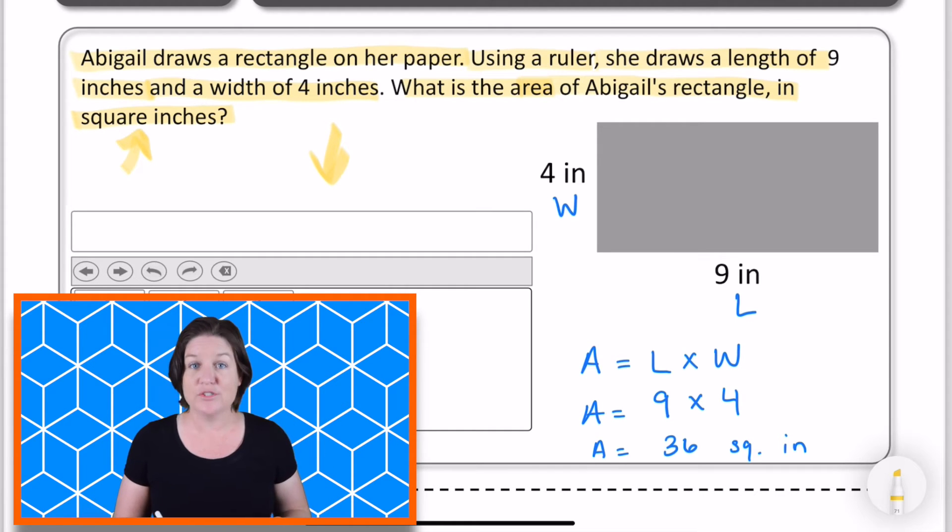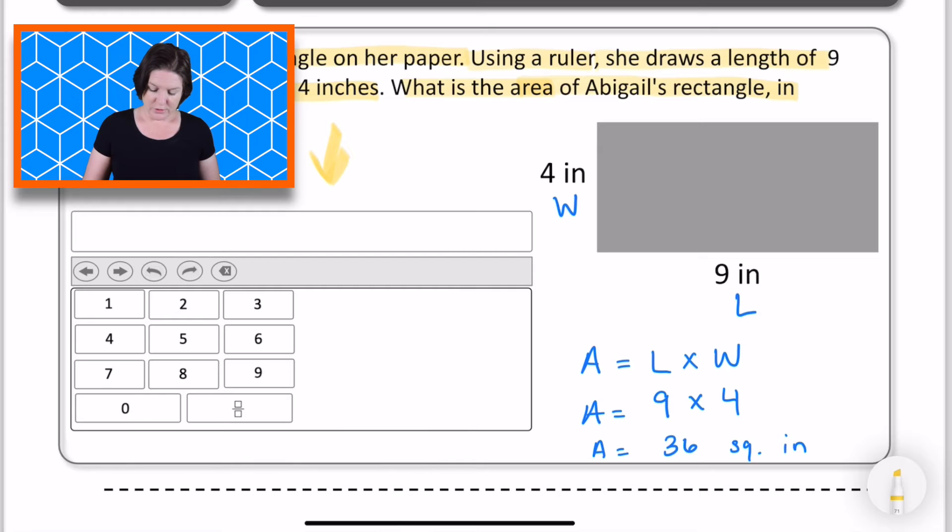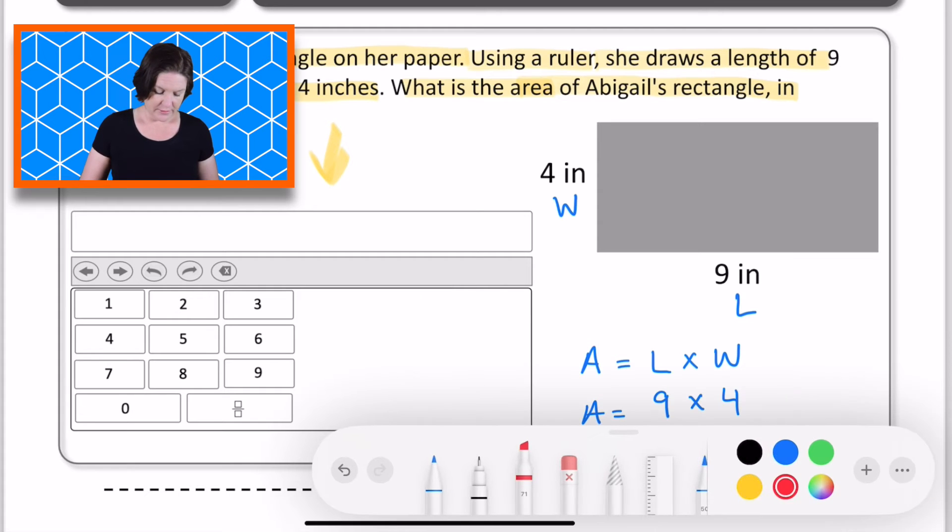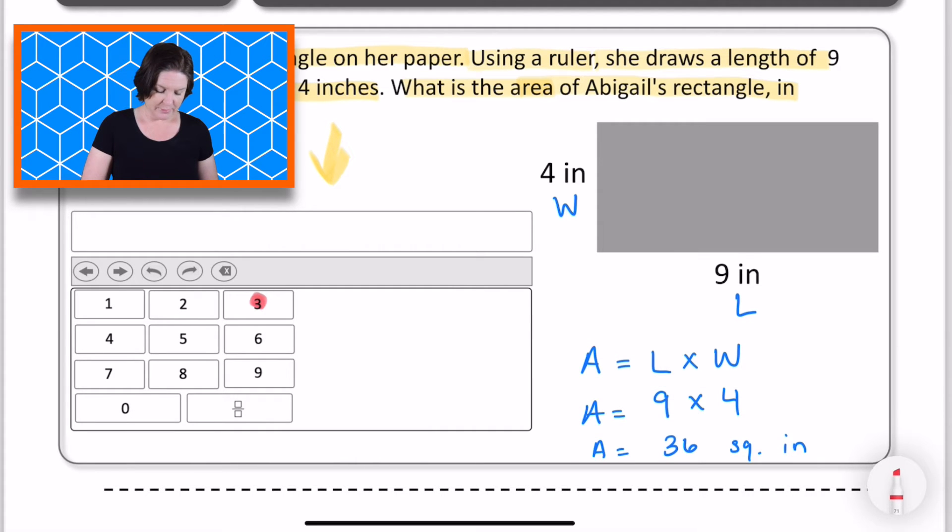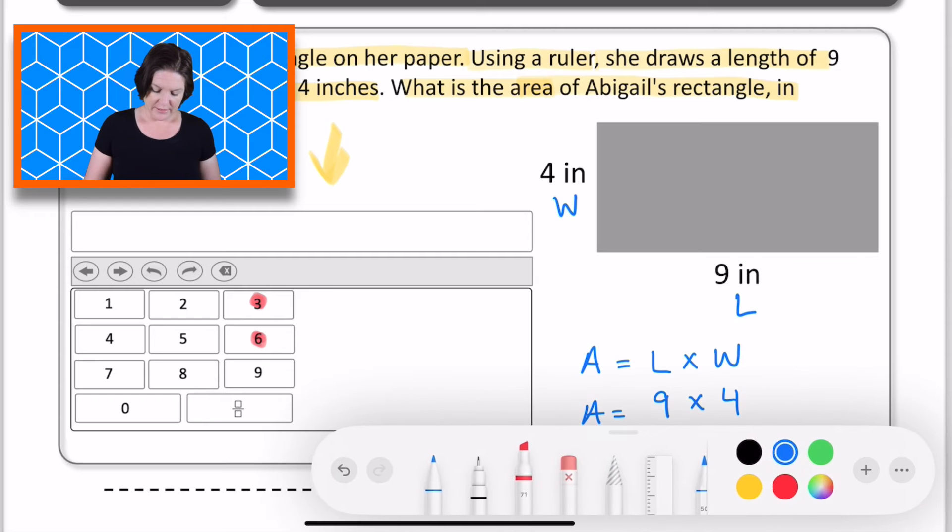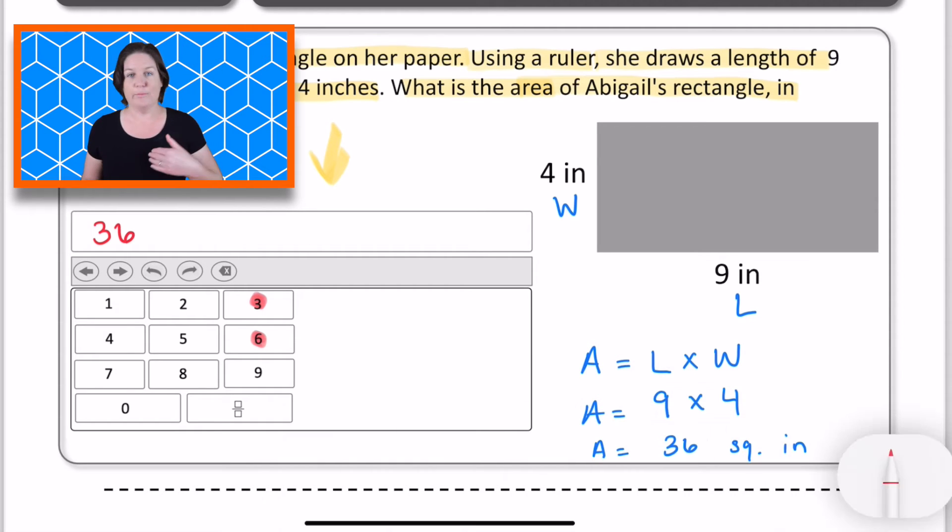And there is no way to input that into our equation editor. So what I would do is tap the three and tap the six. And when I do that, that answer should come up right here as 36. And we know it represents 36 square inches.